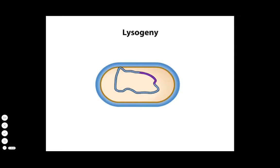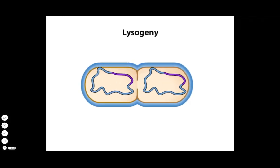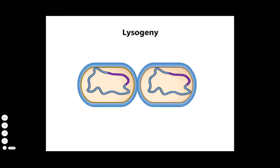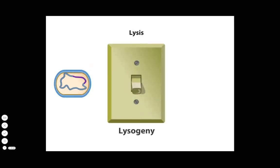Lysogeny is a condition in which the phage genome is replicated along with that of the host cell as the host reproduces. Implicit in the term lysogeny is the ability of such a strain to generate a lytic burst of phage. The regulatory switch between lysis and lysogeny responds to environmental cues — that is, how likely is it that the host cell will survive and continue to propagate the phage genome under present environmental conditions.